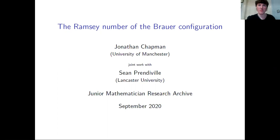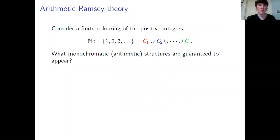Hello, my name is Jonathan Chapman. I'm a PhD student at the University of Manchester and this is my talk on the Ramsey number of the Brouwer configuration. Everything I talk about today is joint work with Sean Prenderville at Lancaster University. This talk is being recorded for the Junior Mathematician Research Archive and I'd like to thank the organisers of the JMRA for giving me the opportunity to speak.